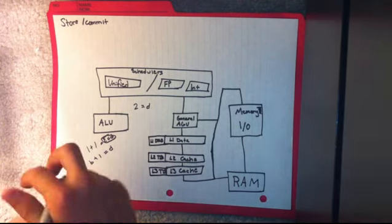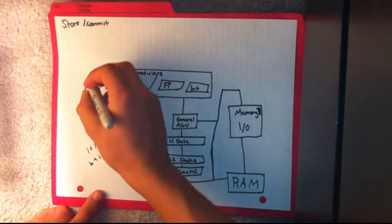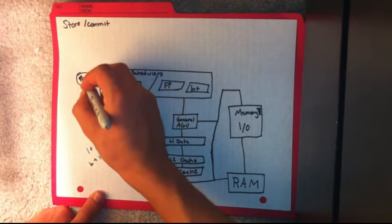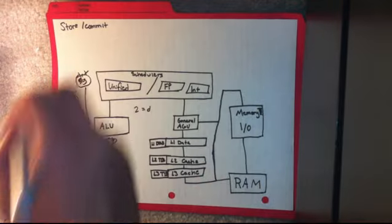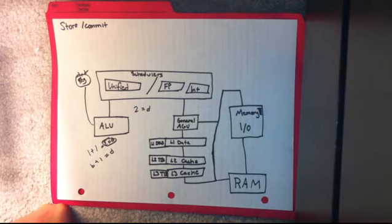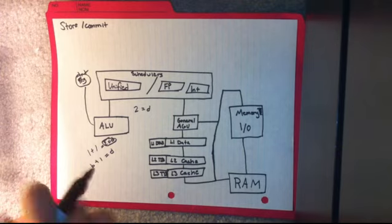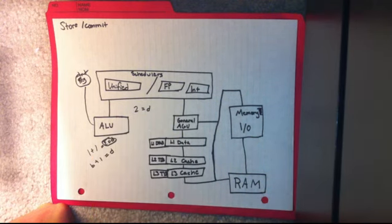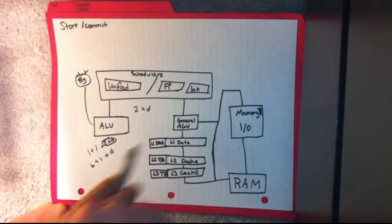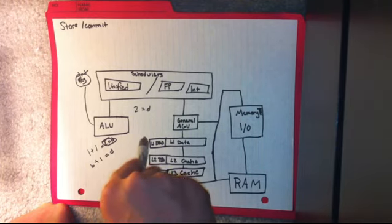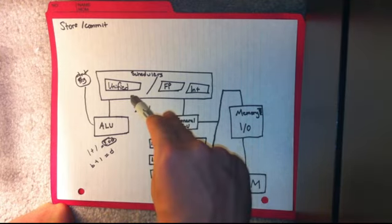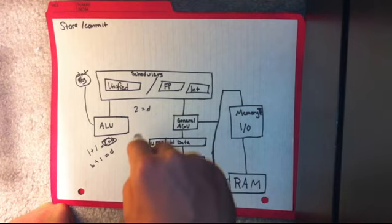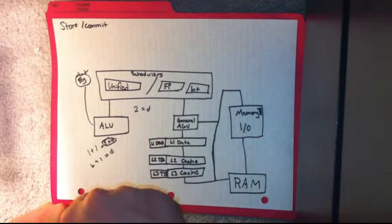Once the ALU gets the result two equals d, it'll go to a place called a register — reg for register — and it'll be in the integer register because that's what the ALU works with directly. Then the scheduler — either the unified scheduler in the case of Intel, or the split schedulers in the case of AMD — will be notified that the instruction is done, the result is there. It'll then go to the AGU and be passed off. Since this is an integer instruction, the unified scheduler will take it and throw it over to the AGU with no issues.